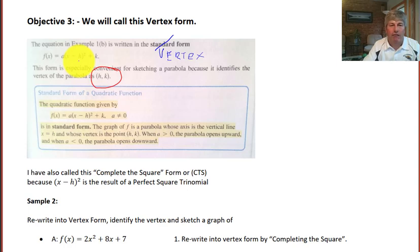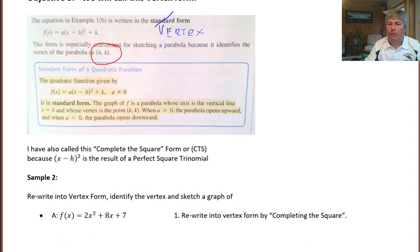Where we had a vertical shift and a horizontal shift. The vertical shift being the k and the horizontal shift being the h. And then even the reflection would be a. So we've seen this before. Now I've also called this complete the square form. And the reason I call it complete the square form is because the x minus h quantity squared is really a perfect square trinomial. And when we complete the square, we always have a PST or a perfect square trinomial.